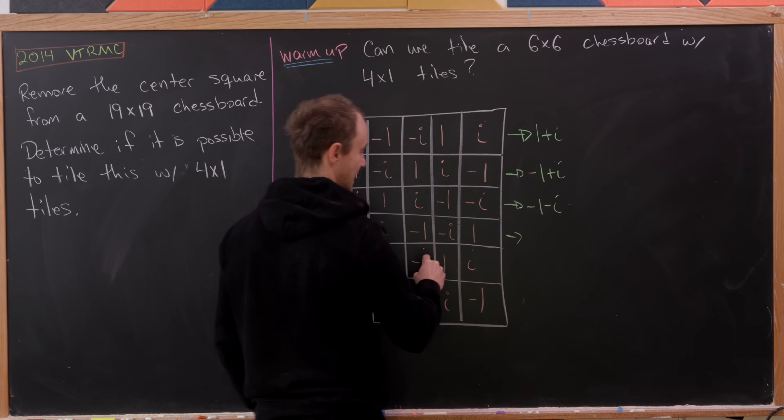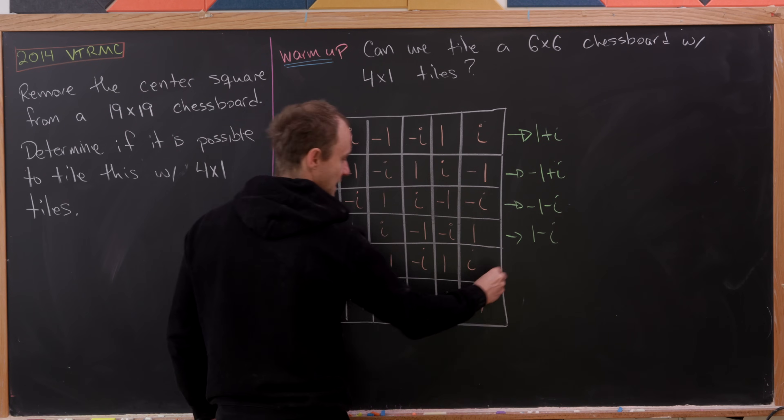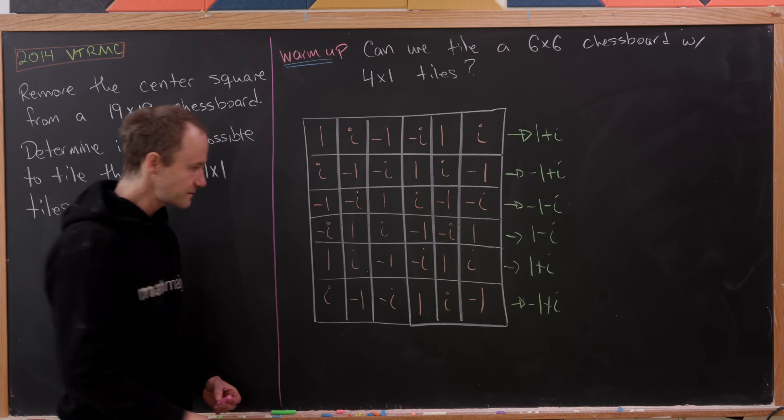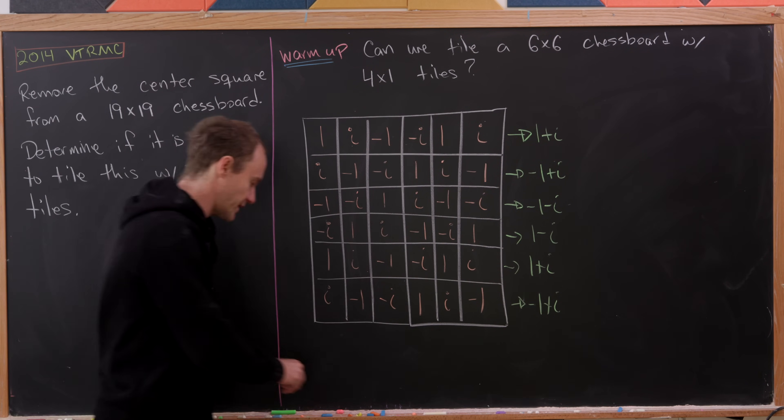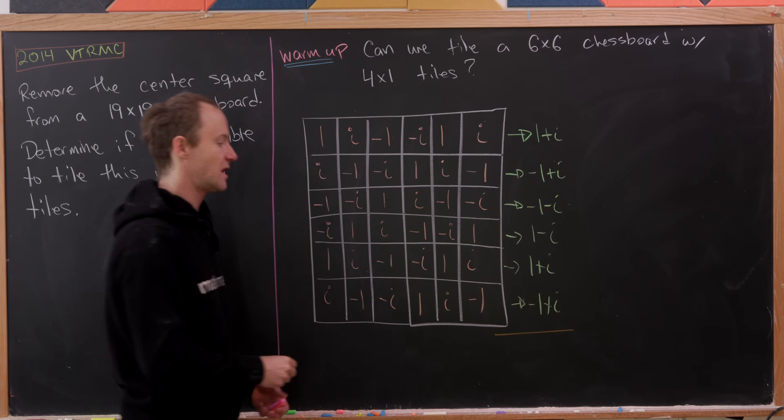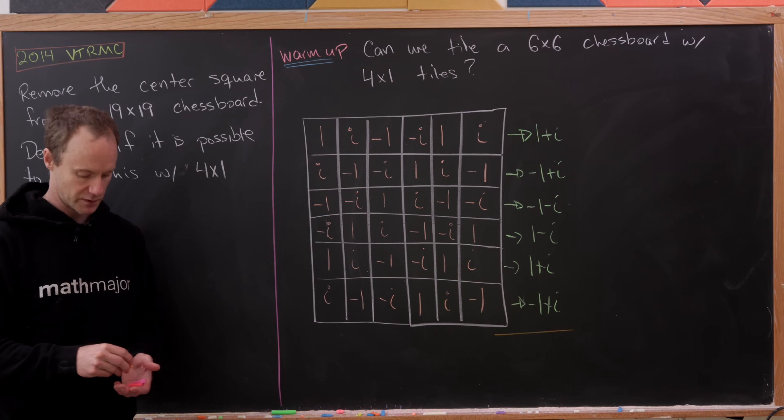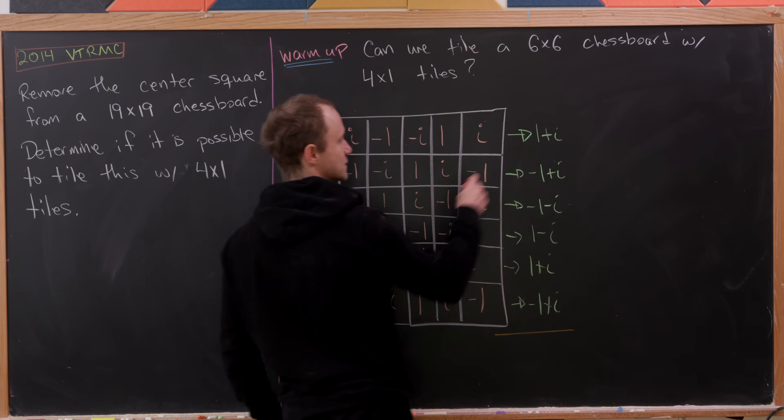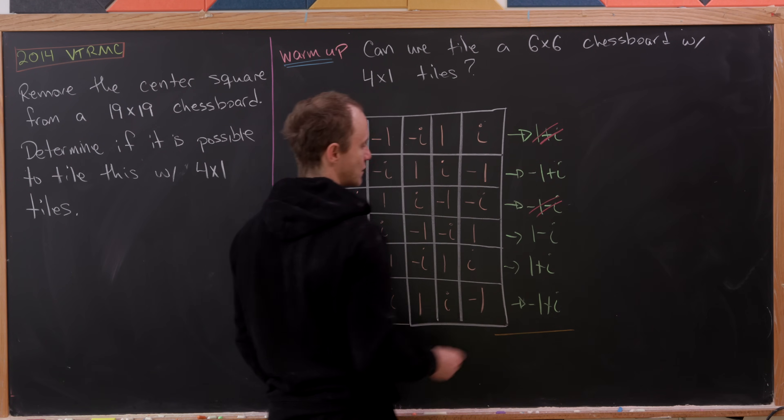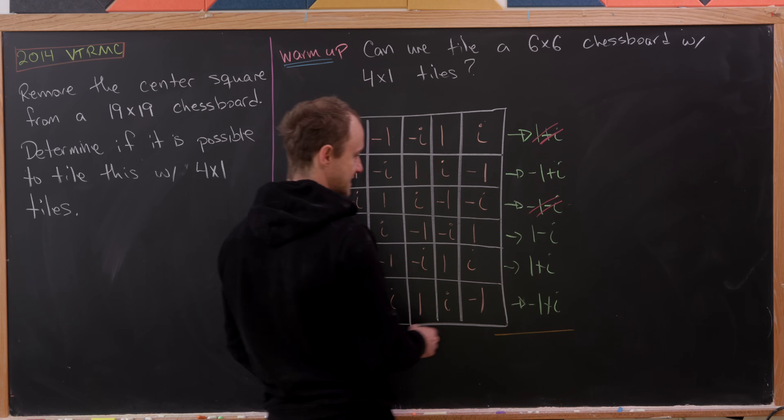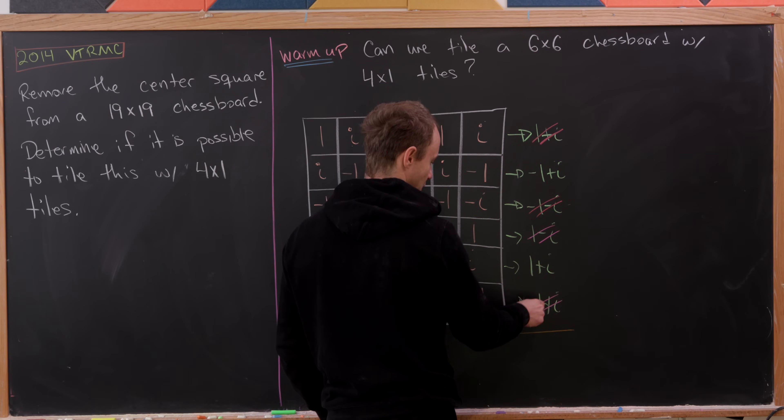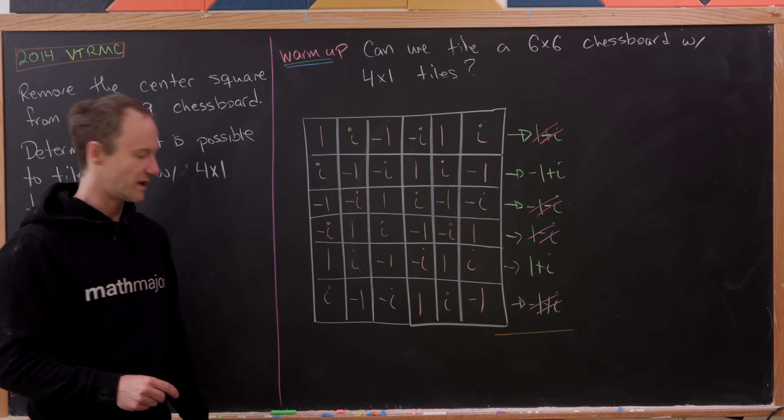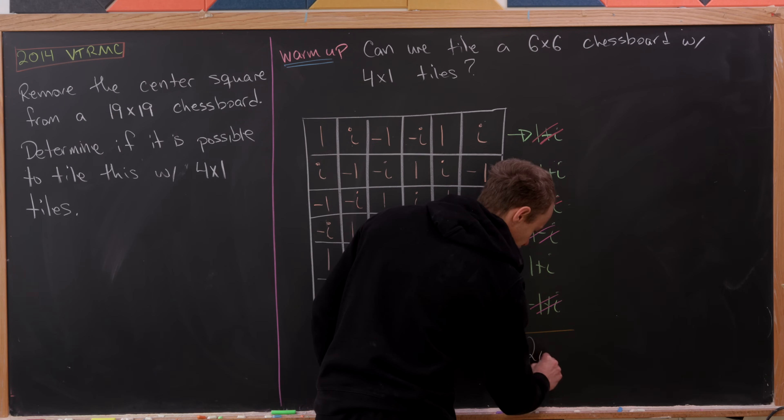This will be minus 1 plus i. This will be minus 1 minus i. Here we'll get 1 minus i. Here we'll get 1 plus i again. And here we'll get minus 1 plus i. Since we've summed the rows, all we have to do to finish our summation is to sum the remaining column. Let's observe that we get some simplification here as well. This 1 plus i cancels this minus 1 minus i. This 1 minus i will cancel this minus 1 plus i. And then we have minus 1 plus i plus 1 plus i. So in the end, that sum will be 2i.